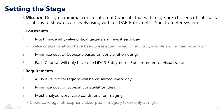For today we're going to design a minimal constellation of CubeSats that will be able to image pre-chosen critical coastal locations and show that ocean levels are rising using a LiDAR bathymetric spectrometer system. The three constraints imposed are: we must image all 12 critical regions and revisit them at least every day; we will minimize the cost of our CubeSats based on constellation design; and each CubeSat will only house one LiDAR bathymetric spectrometer system due to the size of the CubeSat and spectrometer.